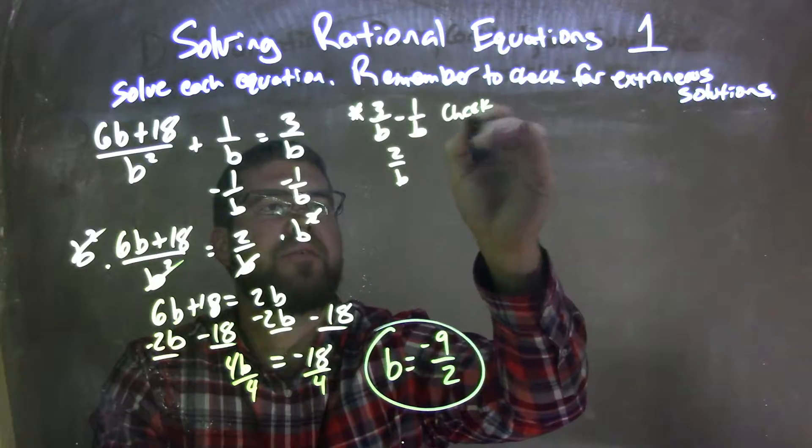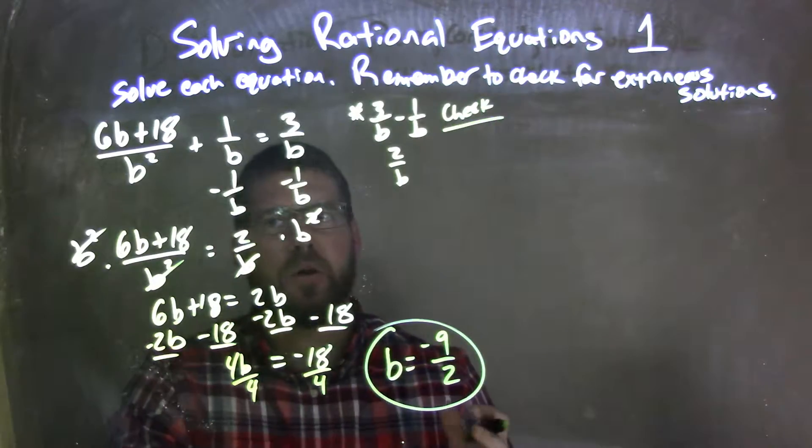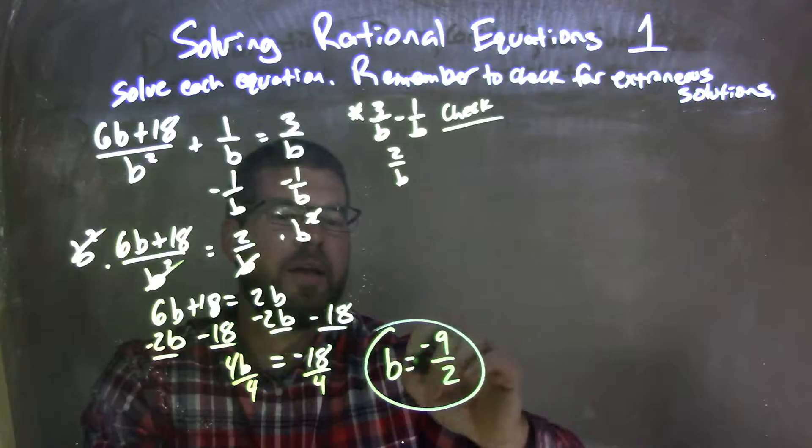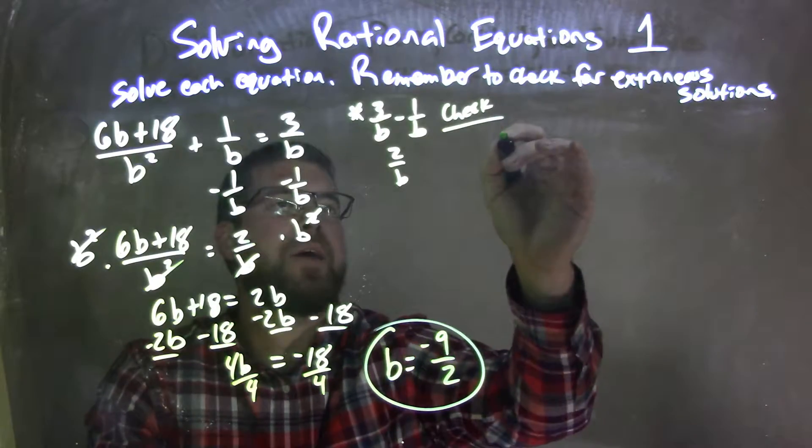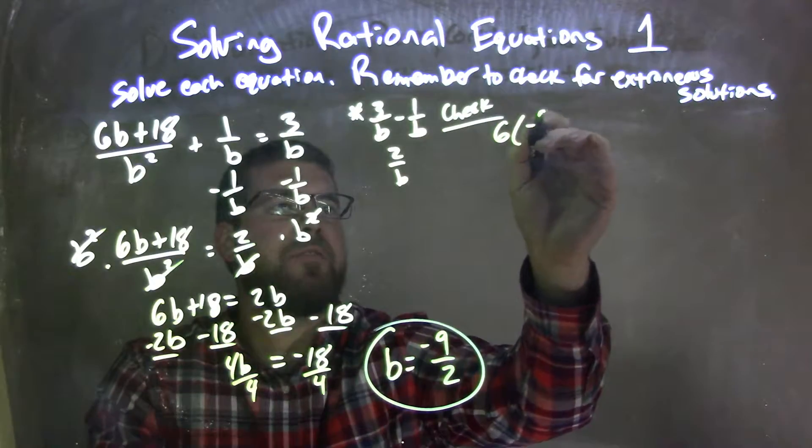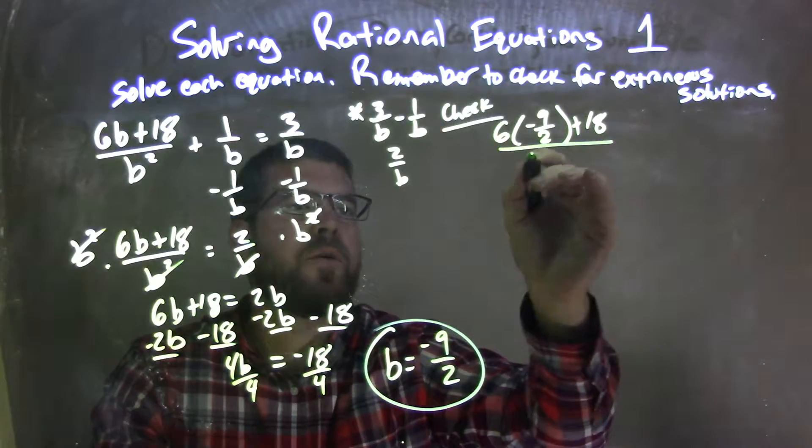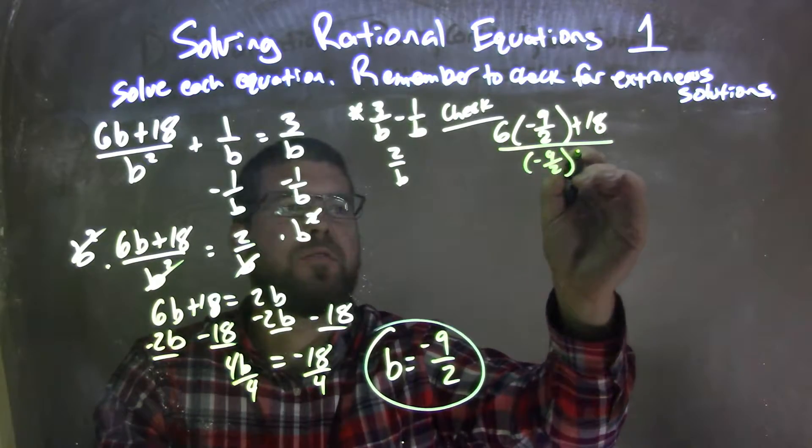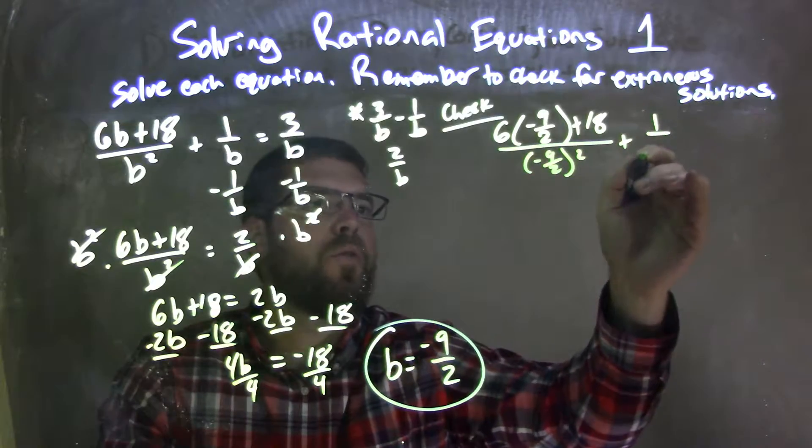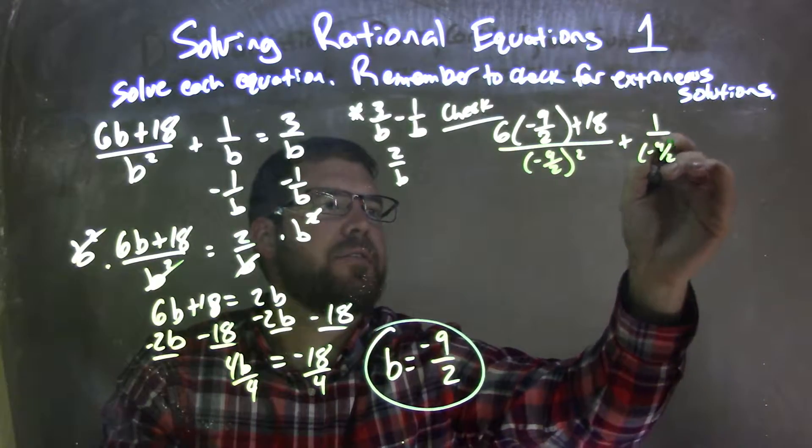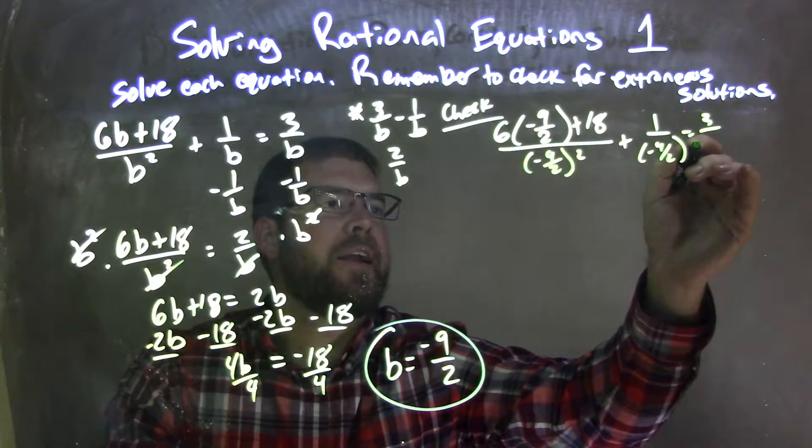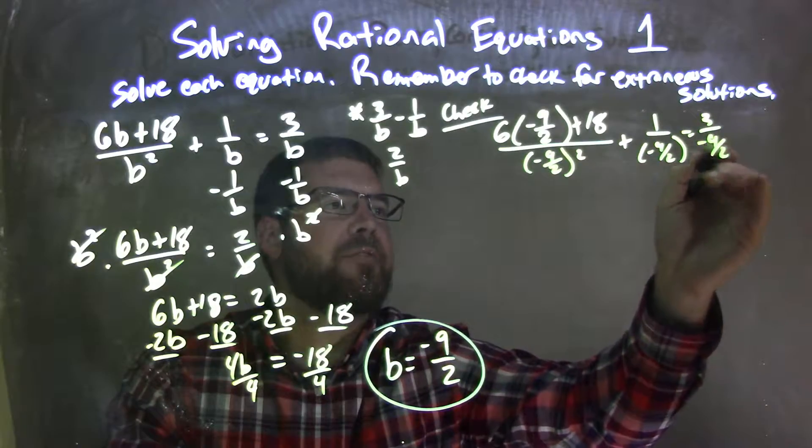And when I check this, make sure your fractions are all in line. So I'm going to put b in, negative 9 halves in for b, so we have 6 times negative 9 halves plus 18 over negative 9 halves squared, plus 1 over negative 9 halves equals 3 over negative 9 halves.